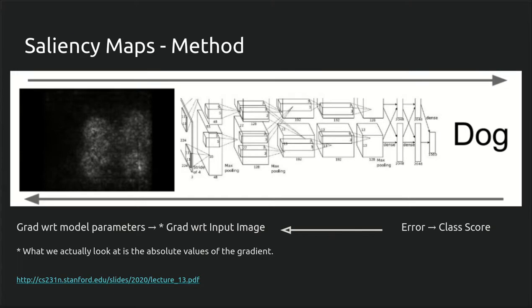These values will be spread between negative infinity and infinity theoretically, so we take the absolute value since we don't care about the direction of the effect. We simply want to know the degree to which it affected the output, and then we can normalize that into some range so it can be displayed as an image.